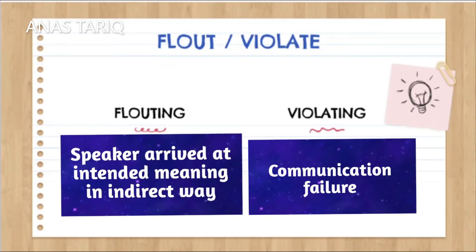While in floating of maxims, the communication does not break down. In floating, the listener arrives at the intended meaning in an indirect way, like in sarcasm. For example, someone failed with bad grades in an exam while the other person congratulates him — that is a floating of a maxim; it is a type of sarcasm. The basic difference between floating and violating is that in violation the communication breaks down, mainly because of too little, too much, or ambiguous information. While in floating, the communication does not break down and the listener arrives at the intended meaning in an indirect way.